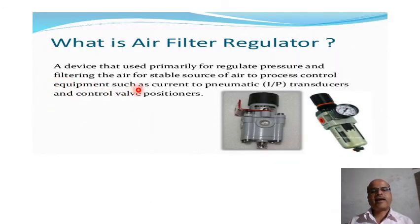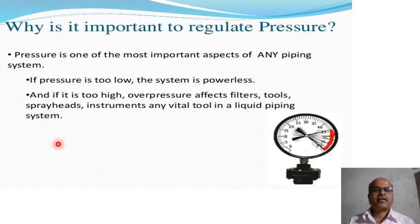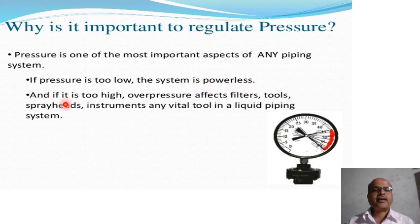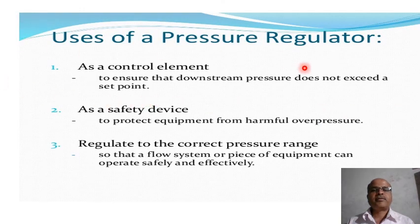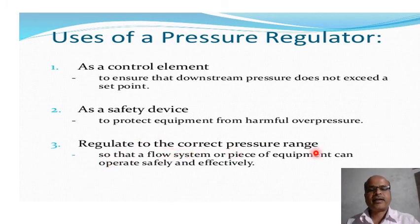An air filter regulator is a device used primarily for regulating pressure and filtering air for a stable source of air to process control equipment such as current-to-pneumatic transducers, control valves, and positioners. Pressure regulation is important because if pressure is too low, the system is powerless, and if it is too high, over-pressure affects filters, tools, spray heads, and instruments. Uses of a pressure regulator include: ensuring downstream pressure does not exceed a set point, acting as a safety device to protect equipment from harmful over-pressure, and regulating to the correct pressure range.